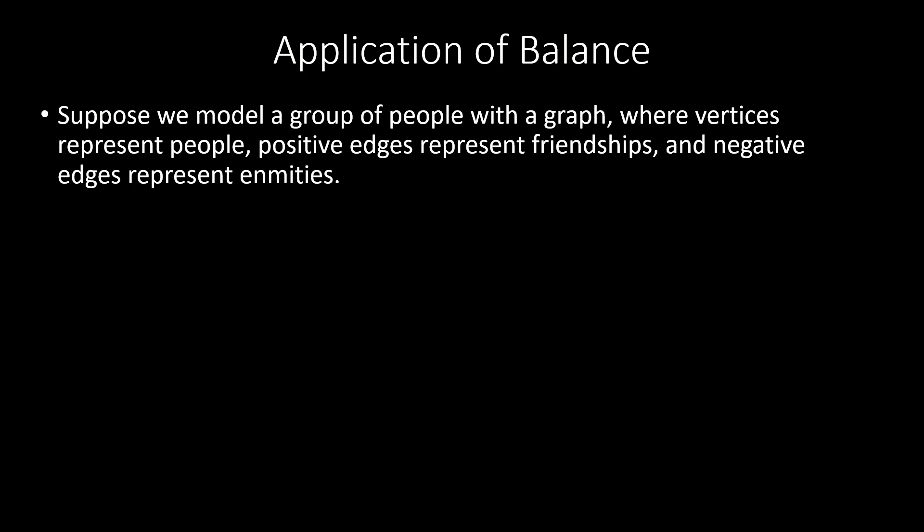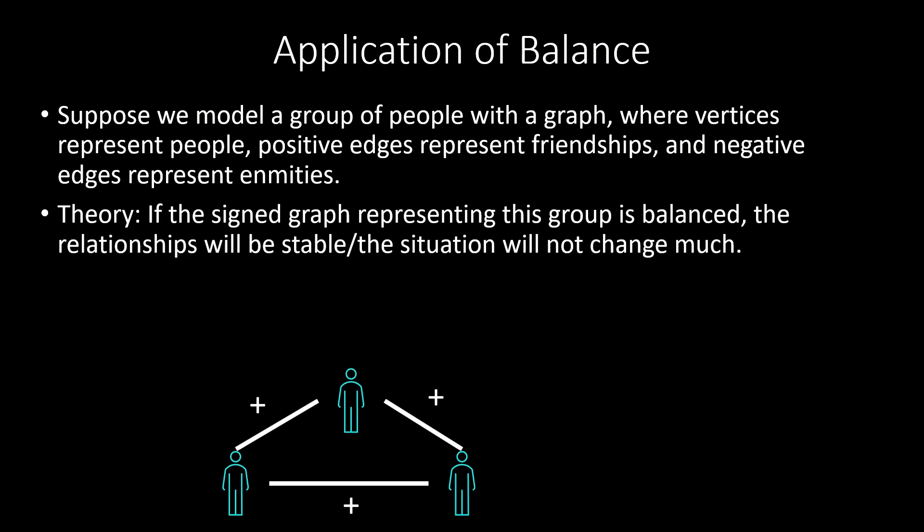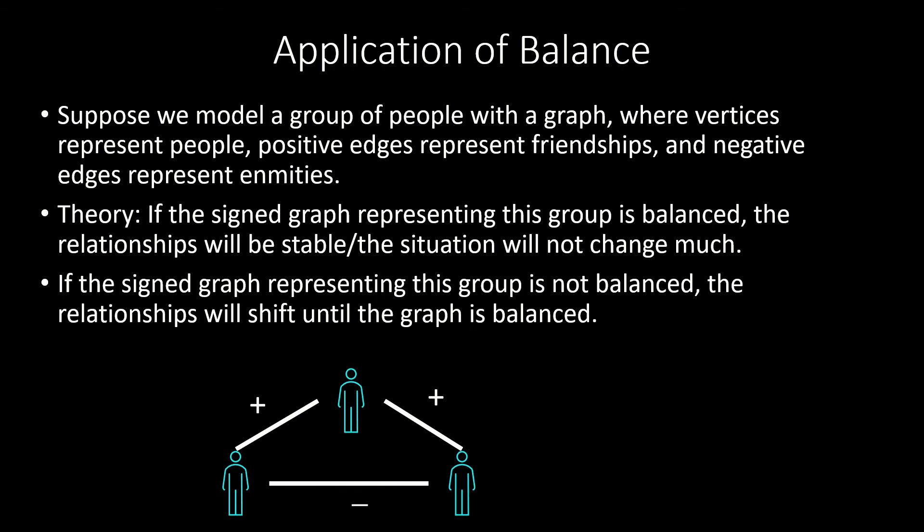The concept of balance has been applied in social psychology. Say you have a group of people where each person is modeled by a vertex, a friendship is modeled by a positive edge, and an enmity is modeled by a negative edge. It's theorized that if the signed graph representing the group is balanced, we can expect the relationships to remain stable, but if it's not balanced, we can expect some relationships to change until it is balanced again.